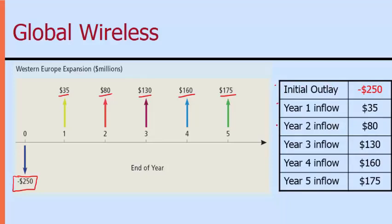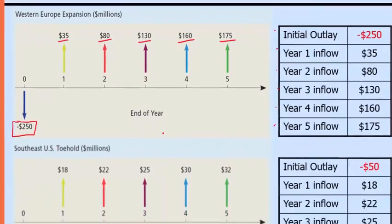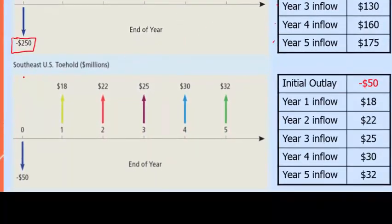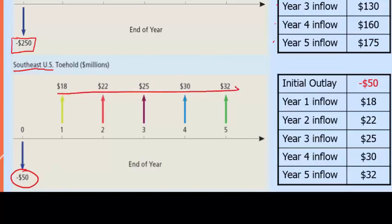For the Southeast United States, it's a much smaller project requiring only a $50 million initial investment. It will generate smaller but growing returns as market penetration increases: starting at $18 million in year one and growing to $32 million by year five. Depending on how things play out, the smaller project could actually be the better project — it just depends on whether it passes the tests we apply.